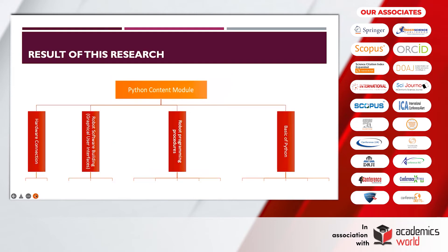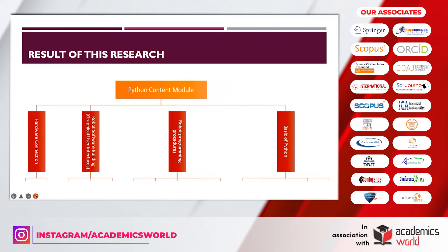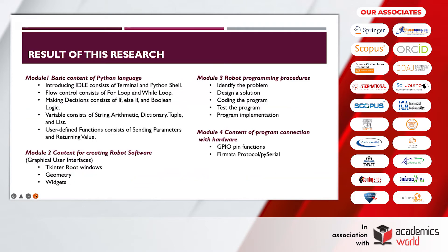The result of my research: I can conclude that the Python Content Module has four modules. Module one is about the basic content of Python language. Module two is content for creating the robot software. Module three is about the robot programming procedure. And module four is content of program connection with hardware.